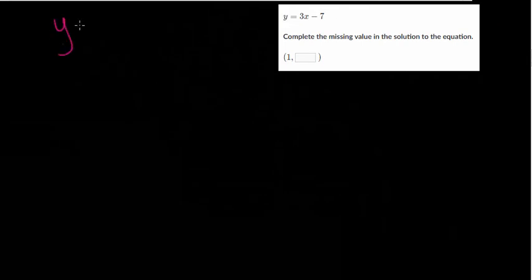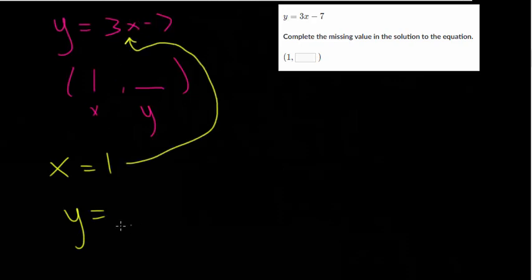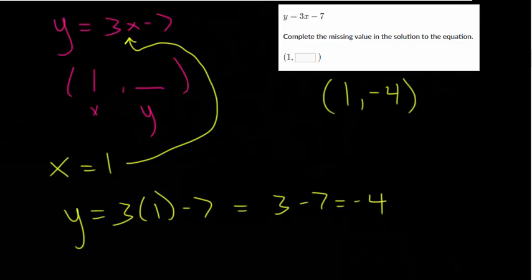And again we just have this equation. Y is 3x minus 7. And a coordinate pair where we're given the x value. But we're missing the y value. So we can plug what we do know into the equation. That x is 1. So anywhere we see an x we're going to plug in 1. So y would be 3 times 1 minus 7. 3 times 1 is 3. Minus 7 would give you negative 4. So we think it goes through the pair, the coordinate pair 1 comma minus 4. But now we're going to check our work.